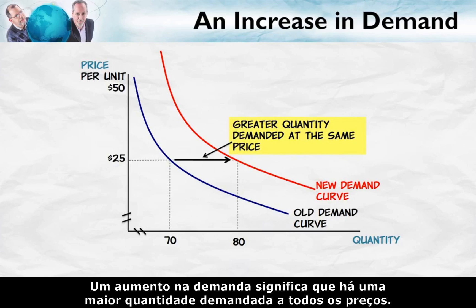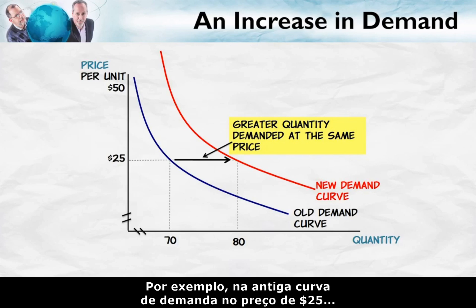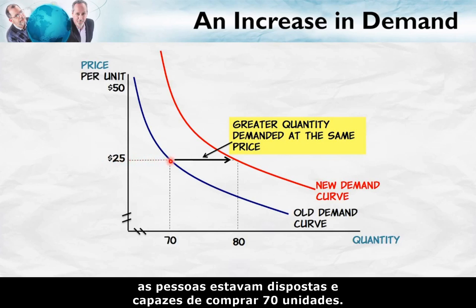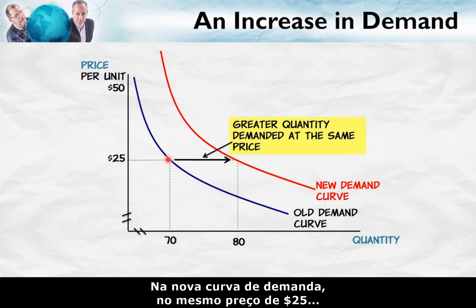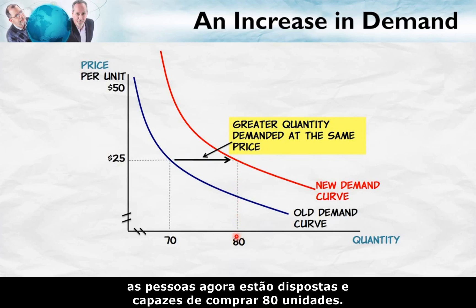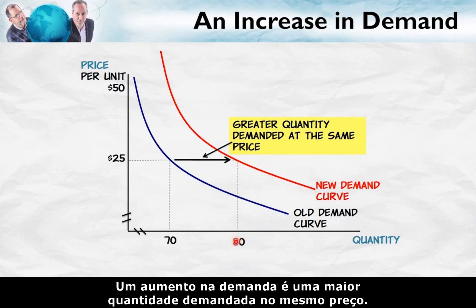An increase in demand means there's a greater quantity demanded at every price. For example, on the old demand curve, at a price of $25, people were willing and able to purchase 70 units. On the new demand curve, at that same price of $25, people are now willing and able to purchase 80 units. An increase in demand is a greater quantity demanded at the same price.